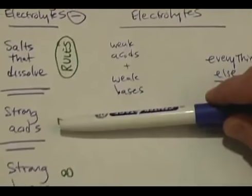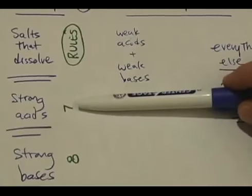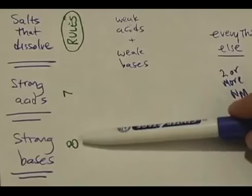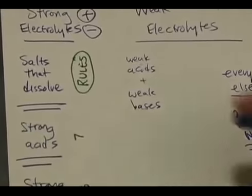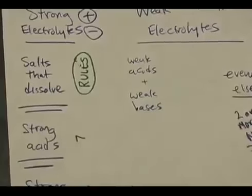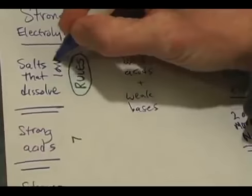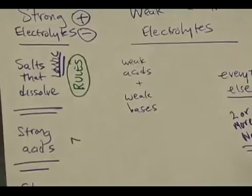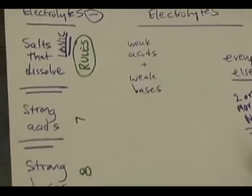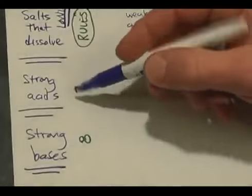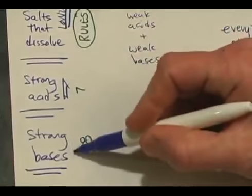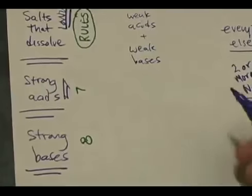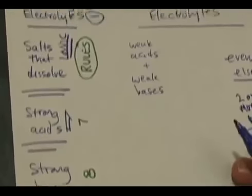The strong acids — there are seven that we need to memorize. And the strong bases, of which there are eight that we need to memorize. The salts are ionic, meaning that they have a metal in them or two polyatomic ions stuck together. The strong acids are molecular, but they completely dissociate to form ions. And the strong bases are actually the soluble hydroxides, which are kind of like salts as well.